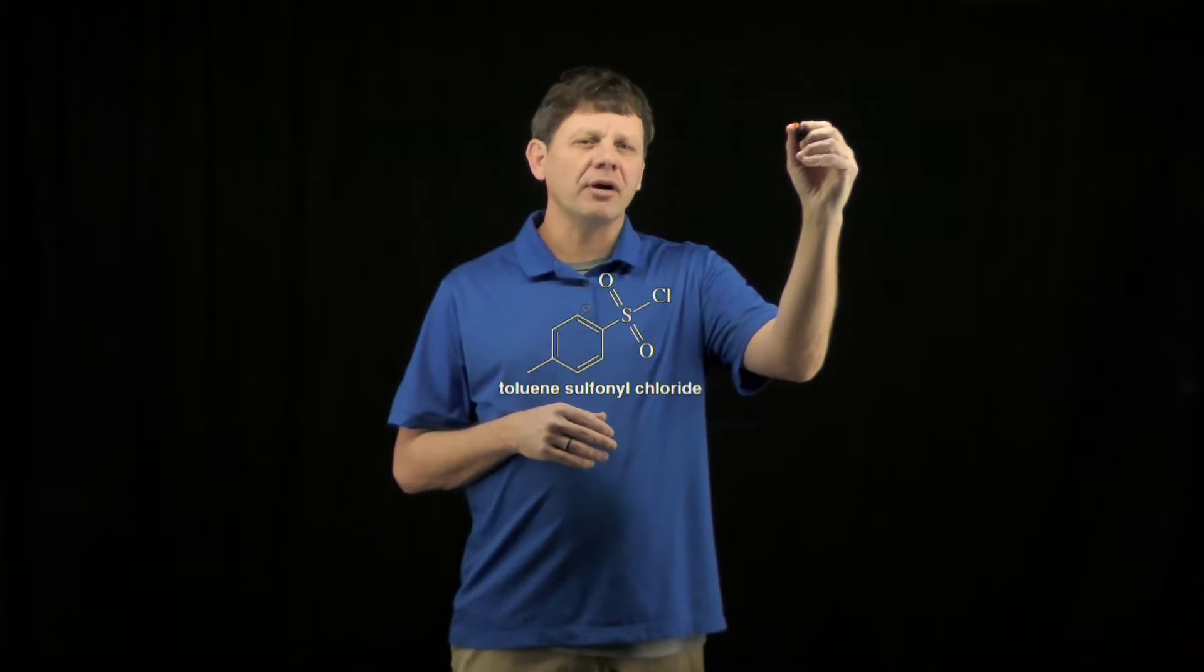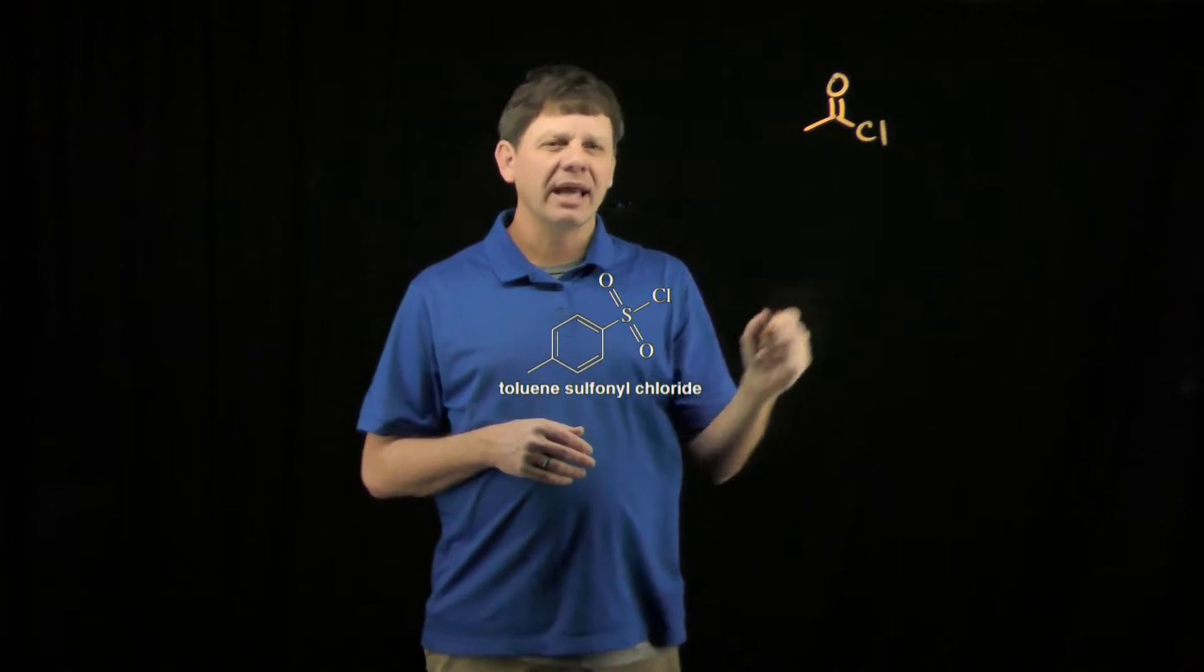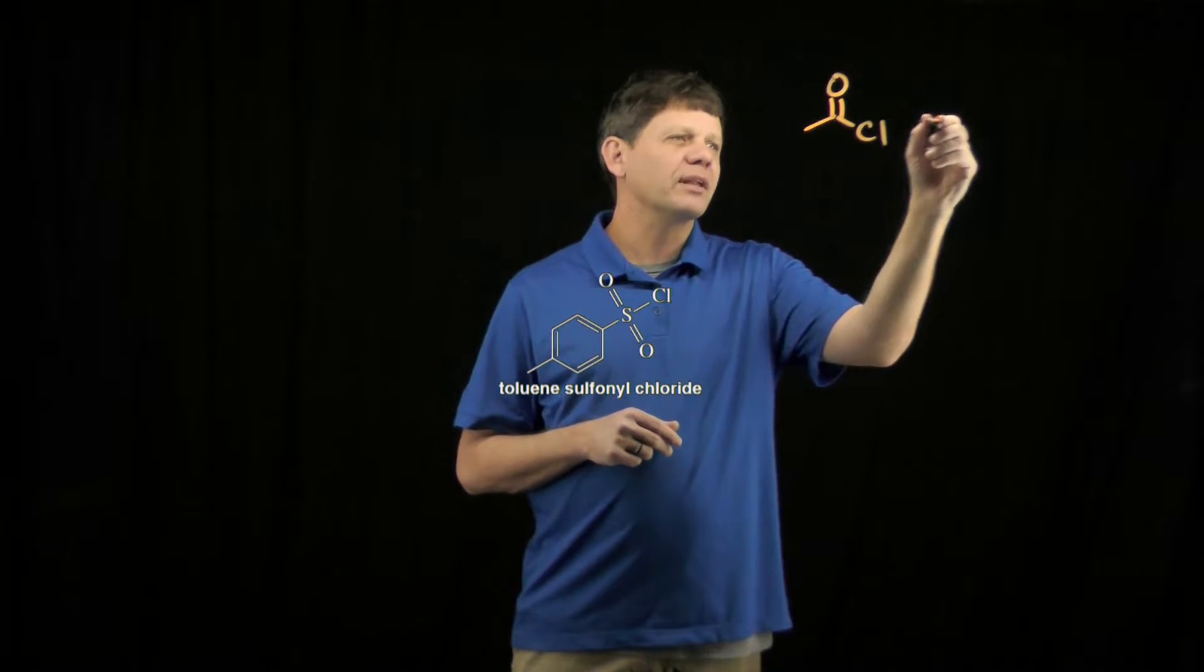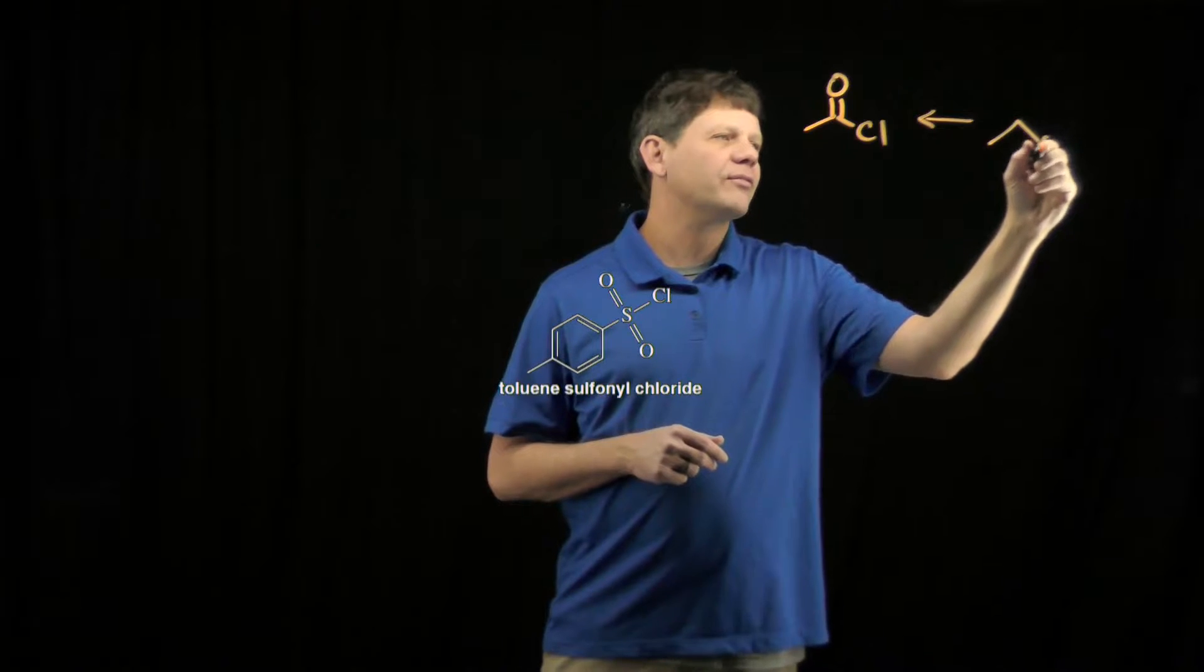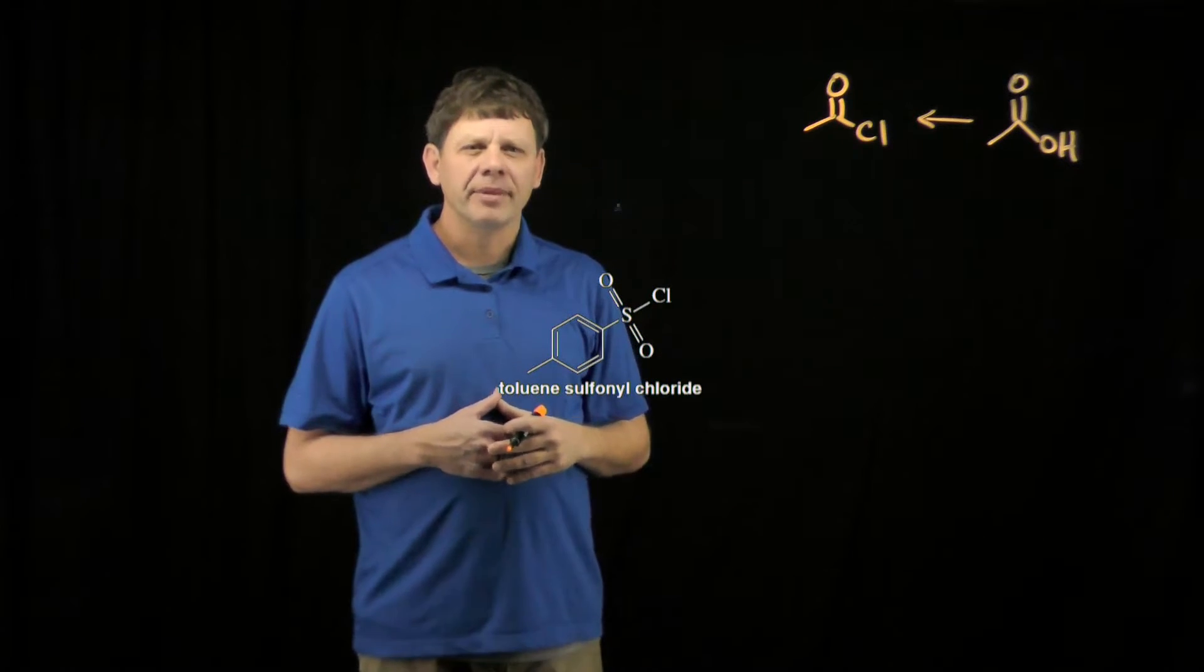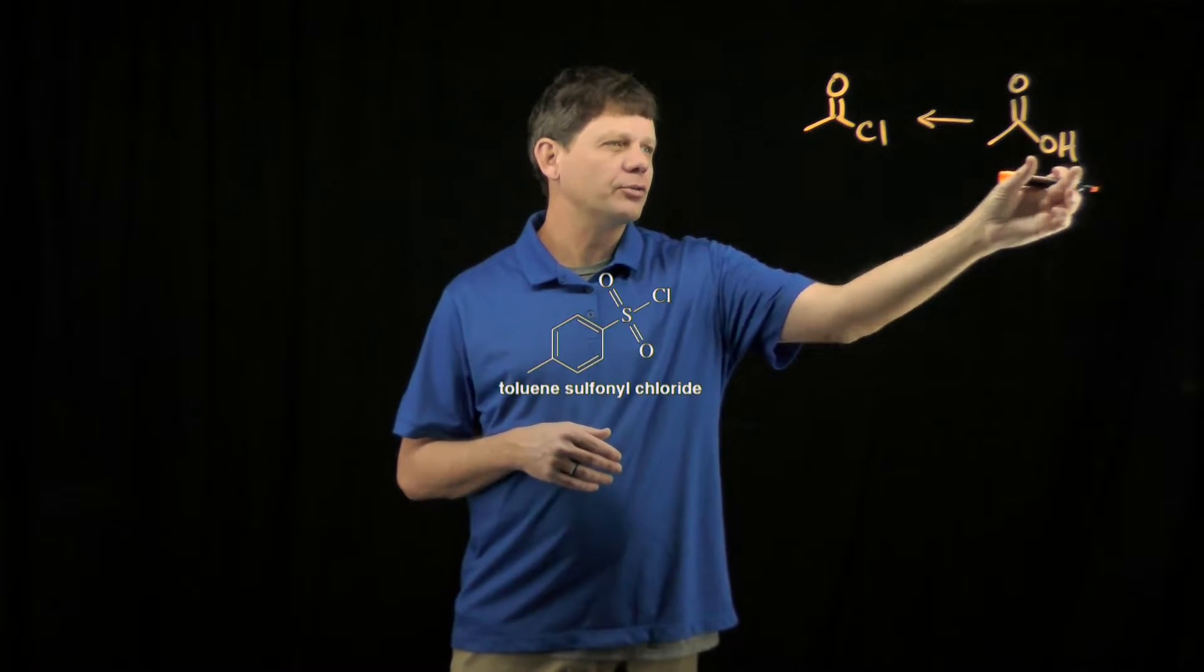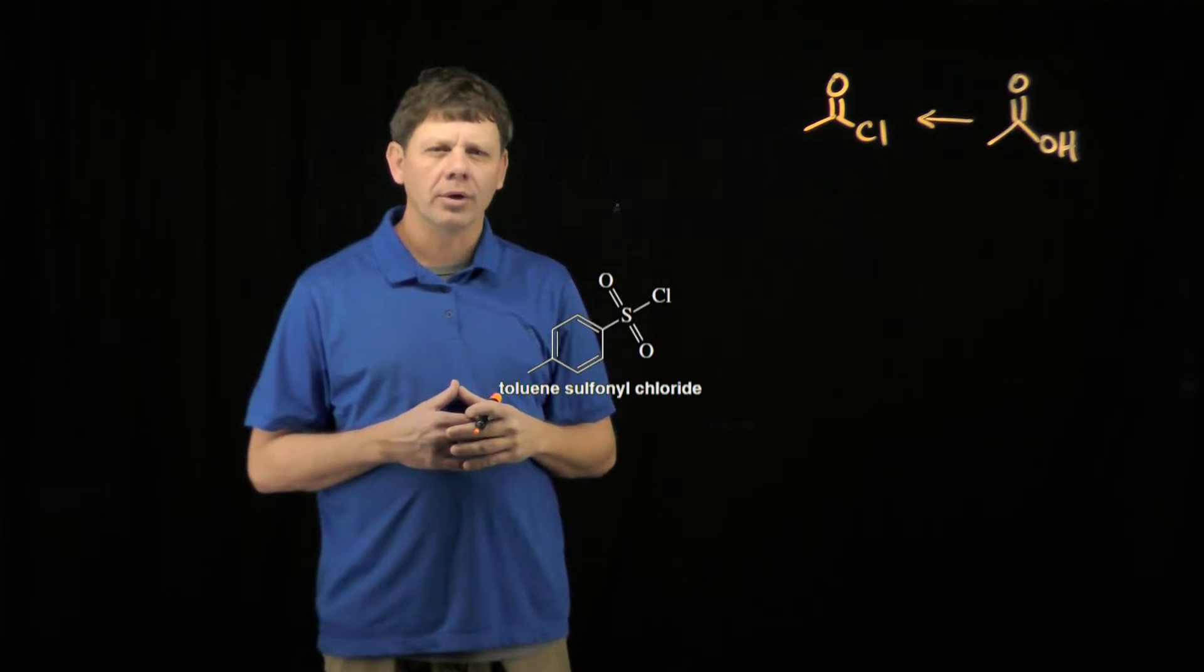Well, let's think about the functional group that is the acid chloride. And what makes it a carboxylic acid derivative is that we think of it as hypothetically arising from the carboxylic acid. And so essentially the move from an acid to a chloride is exchanging a hydroxyl for a chlorine.